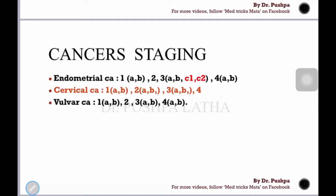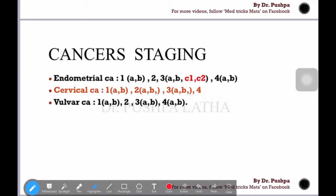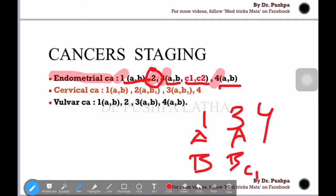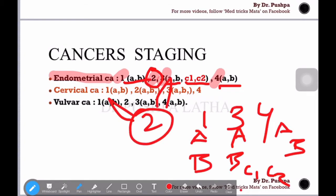Let's memorize complete endometrial cancer staging in a very easy way. First, remember that endometrial cancer has four stages: 1, 2, 3, and 4. Stage 2 will be single (no substages). Stages 1, 3, and 4 will have substages A and B. Additionally, stage 3 has C1 and C2. So: Stage 1 has A and B; Stage 3 has A, B, C1, and C2; Stage 4 has A and B; Stage 2 is single.